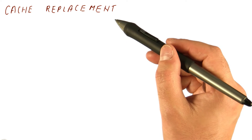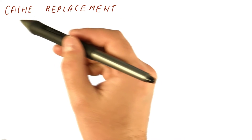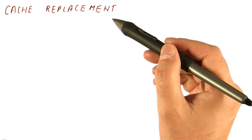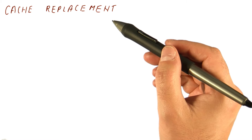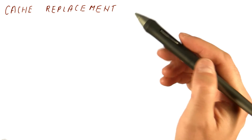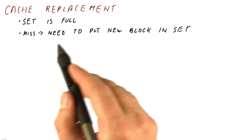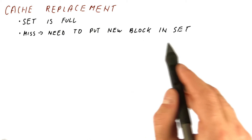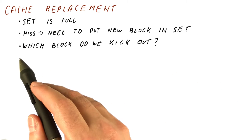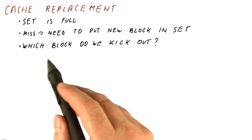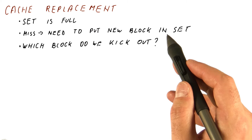Now that we know how caches find data when we are looking for it, let's talk about what happens when we need to replace something from the cache to make room for new data because we have a miss. The situation when we need replacement is: the set where the data needs to go is full, we have a miss, so we need somewhere to put the new block that we're bringing in and we need to put it in that set. The question for cache replacement is which of the blocks in the set do we kick out to make room for the new one?